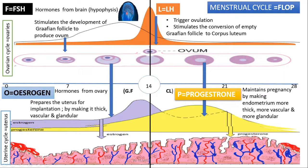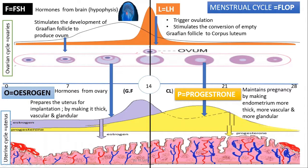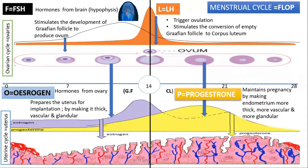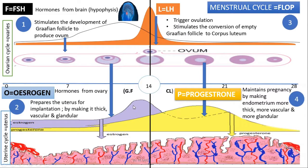The endometrium wall is now fully prepared — more thick, more vesicular with many blood vessels, and more granular with more glands. It can now secrete substances. To explain this whole process, you start with step 1, go to step 2, then step 3, then step 4 — that is how you explain the flow.